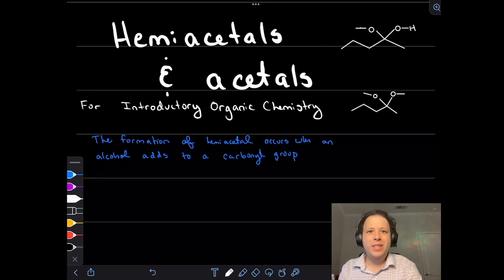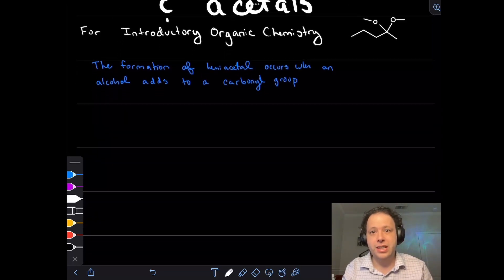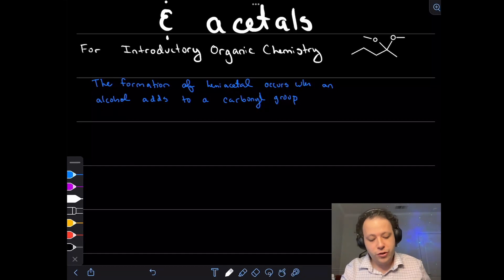Hello, and welcome to my video on hemiacetals and acetals for introductory organic chemistry. Hemiacetals occur when an alcohol adds to a carbonyl group, and this can be one of the trickiest reactions that allied health students come across. I'm going to try to break it down for you in a very simple manner.